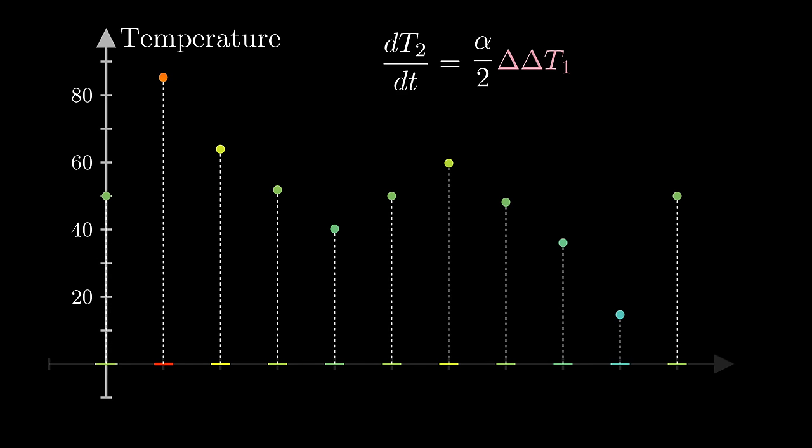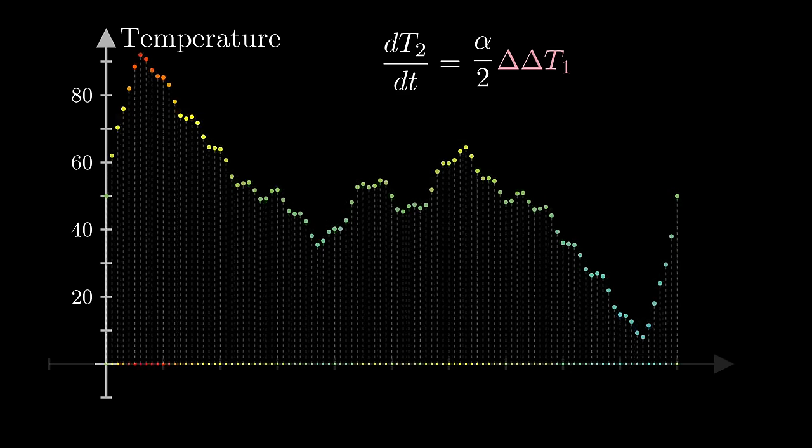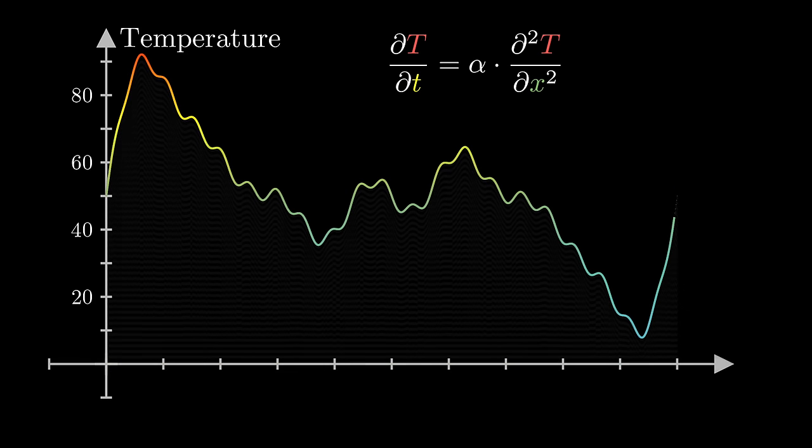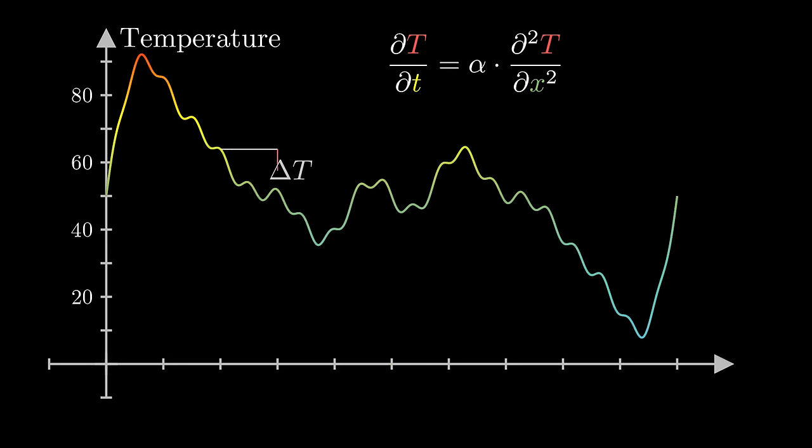As we go from this finite context to the infinite continuous case, the analog of a second difference is the second derivative. Instead of looking at the difference between the temperature values at points some fixed distance apart, you instead consider what happens as you shrink the size of that step towards zero.